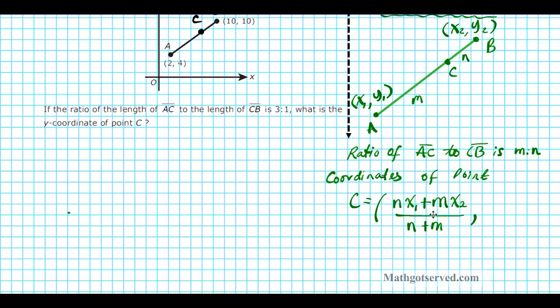And then for the Y coordinate, the same pattern. We're just going to replace X1 and X2 with Y1 and Y2. So we're going to have N times Y1 plus M times Y2, and then divide that by N plus M. And there goes the formula for computing the coordinates of point C.